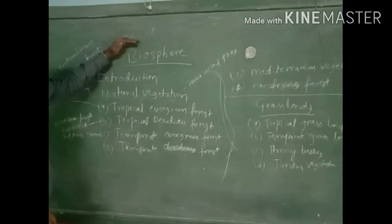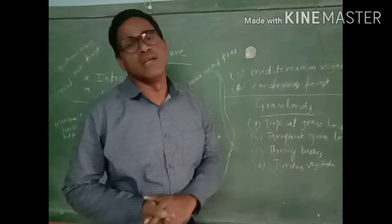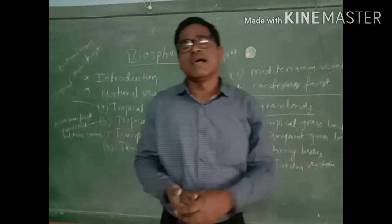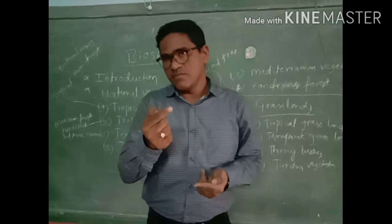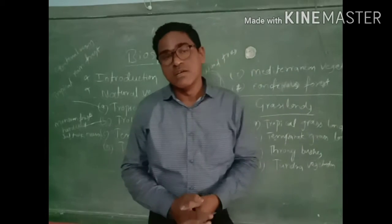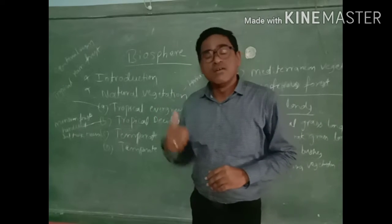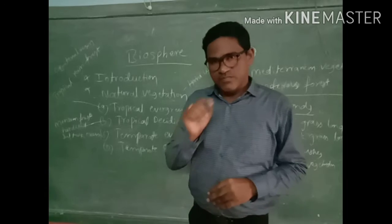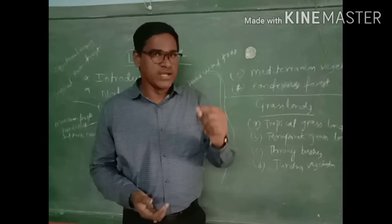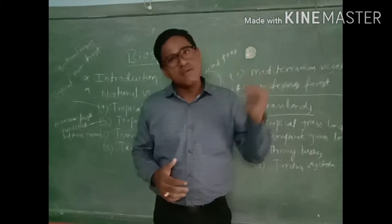Some living things live in water, some live in forest areas, and some live on land. From small bacteria to very big animals like elephants and human beings — all are living on the Earth. Everything that has life comes under the biosphere, from small bacteria and viruses to very big living things.